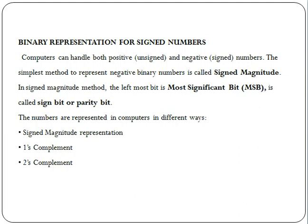One such method is called Signed Magnitude. In the Signed Magnitude method, the leftmost bit is called the MSB — the Most Significant Bit. It is also called the Sign Bit or Parity Bit. There are three types you can define.